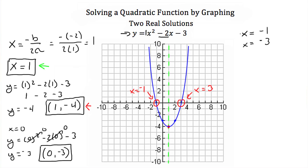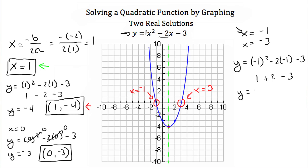You can test these by just plugging them back in. I'll test the first one, x is equal to negative 1. If we do that, we'll have y is equal to negative 1 squared minus 2 times negative 1 minus 3. Negative 1 squared is 1. Negative 2 times negative 1 is a positive 2, and then subtract 3. 1 plus 2 is 3, minus 3 is y is equal to 0, which is what we were hoping would happen.